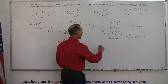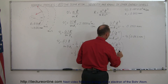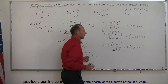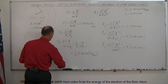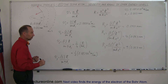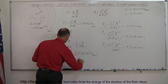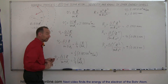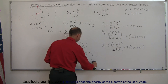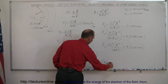Continuing, R3 equals 3² times ℏ² over MKE², which equals 9 times 0.053 nanometers. And the velocity in the third orbit: V3 equals 3 times ℏ over M times 9R1 — because R3 is 9 times R1. This simplifies to (3/9) times ℏ over MR1, which equals (1/3) times 2.185 times 10 to the 6th meters per second.